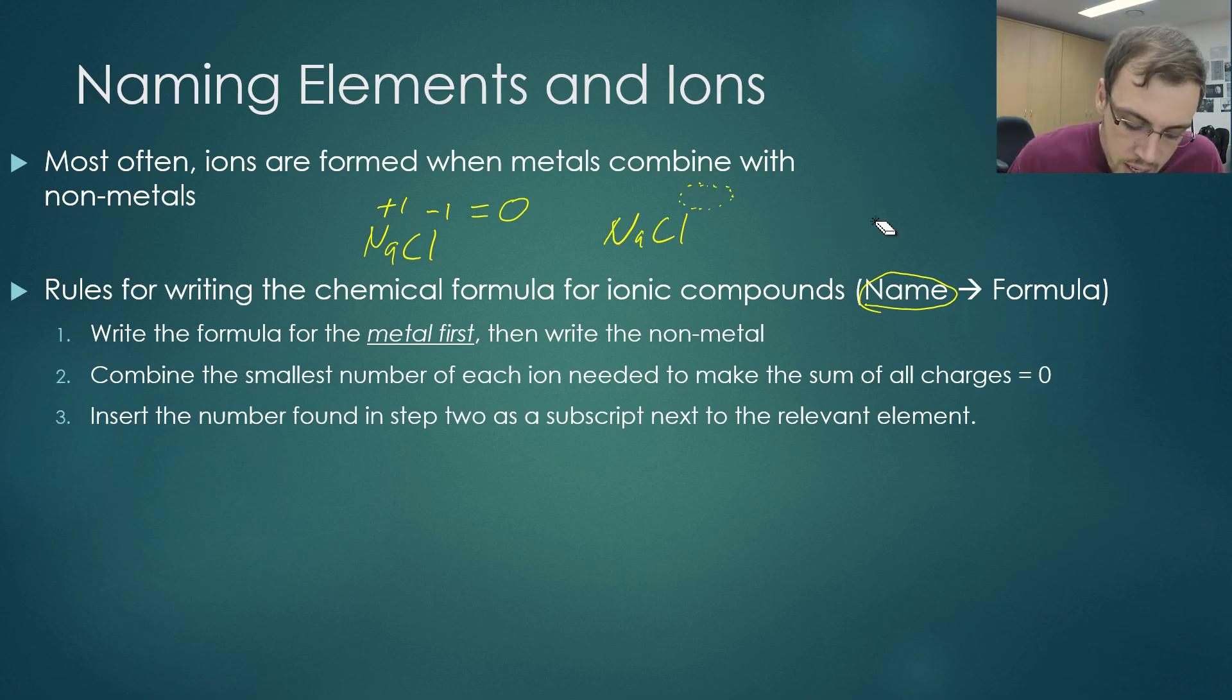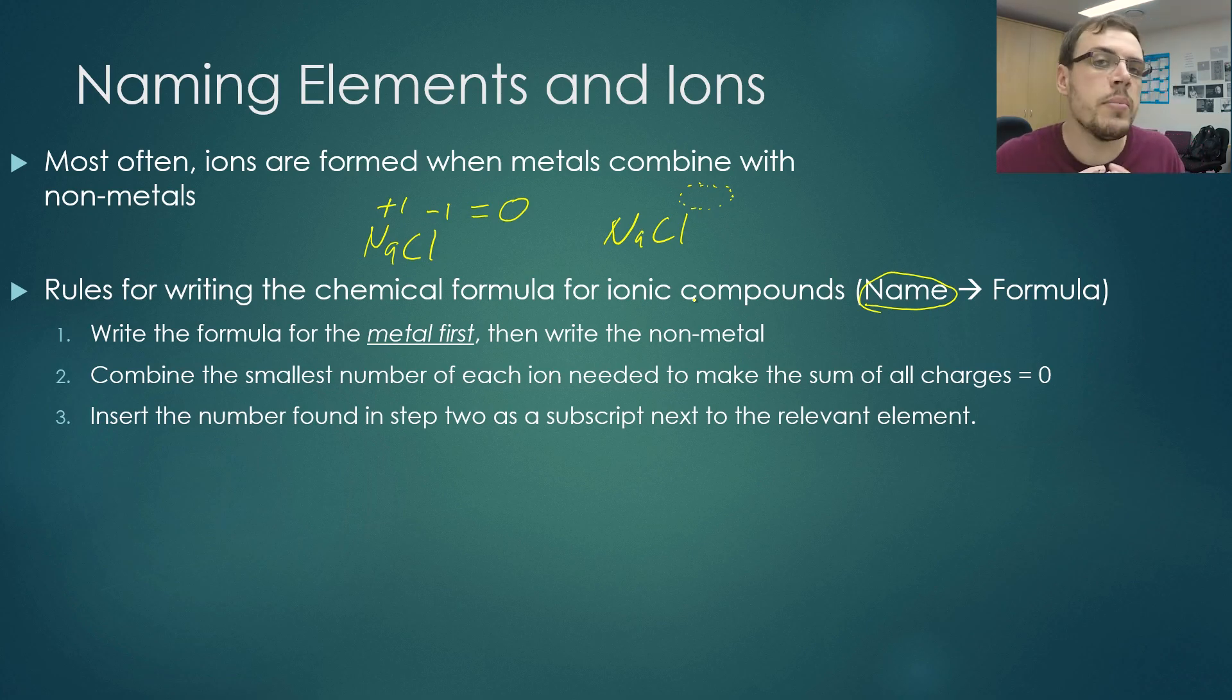What you do is, if you do have an odd ratio, you would then use a subscript to add the certain amount of elements needed in order to make the overall compound neutral. This will be shown in the next video, as I solve a couple of questions for you guys.